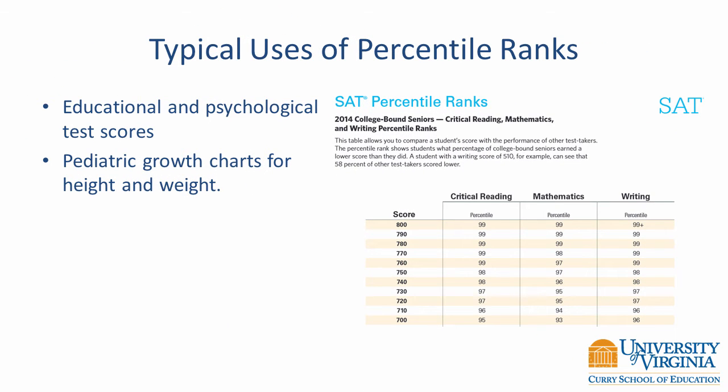In education and psychology, test scores are often converted to percentile ranks to facilitate the interpretation of scores. The SAT is an example. You can see in the table that a person with a critical reading SAT score of 700 has a percentile rank of 95. Therefore, this person did better than 95% of other examinees.